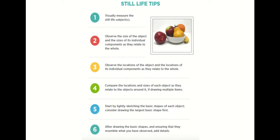Number three: observe the locations of objects and their individual components as they relate to the whole — are they towards the left or right? Place them as accurately as possible on your paper as you look at your reference picture. Number four: compare the locations and sizes of each object relative to the objects around it when drawing multiple items. Make sure you look at the sizes of all objects and where they are positioned in your composition.